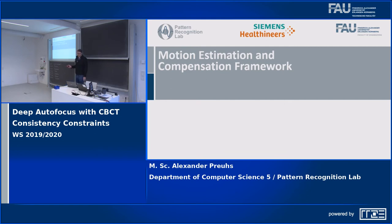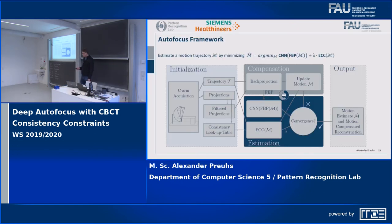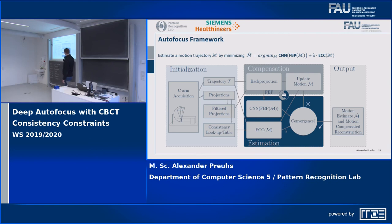This leads to our motion estimation and compensation framework. We start with the cone beam CT acquisition, obtaining the trajectory and projection images. We compute filtered projections for FDK reconstruction, and the consistency look-up table via the Radon derivative. We then compute the predicted reprojection error with our neural network and the consistency term, weight them together, and optimize iteratively until the trajectory converges, yielding a motion estimate.